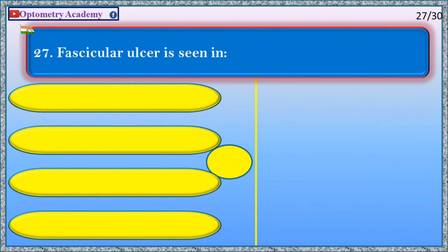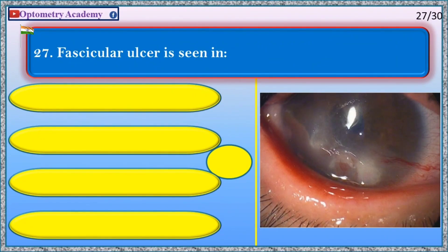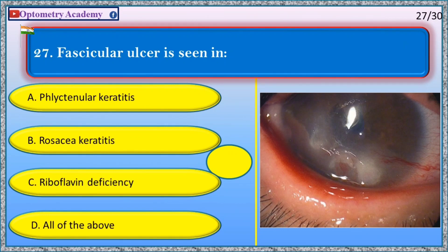Fascicular ulcer is seen in: A. Phlyctenular keratitis, B. Rosacea keratitis, C. Riboflavin deficiency, D. All of the above.